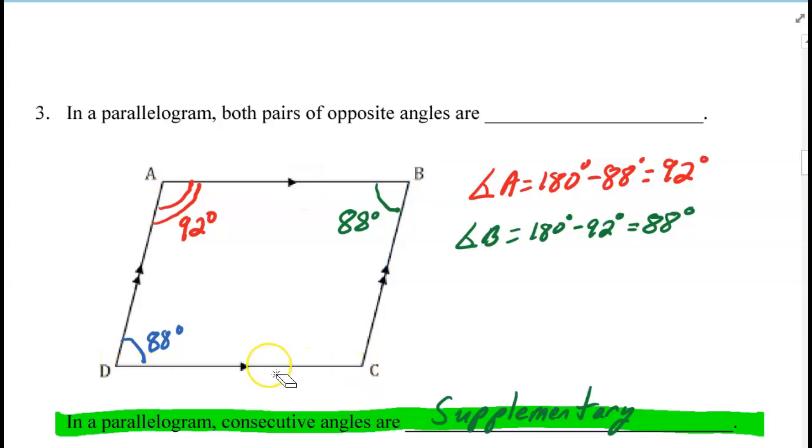Now if you look at this diagram, you can see that angle D and angle B are equal, and using the same reasoning, angle A and angle C are also equal.